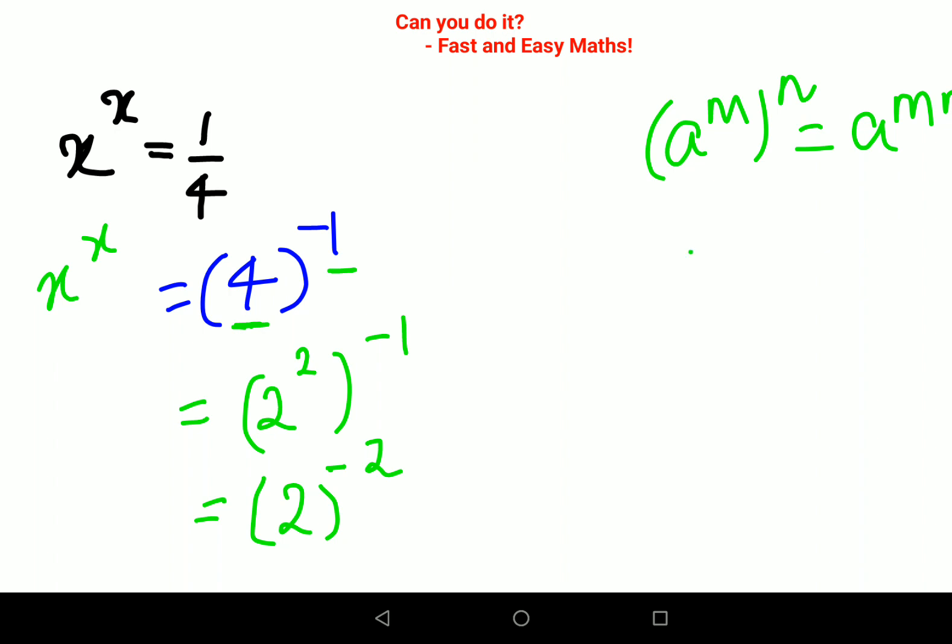So always remember, whenever you have a negative number raised to a square, your final answer will always be positive number and that square. So this 2, or rather the base 2, can now be written as minus 2, the whole raised to minus 2.